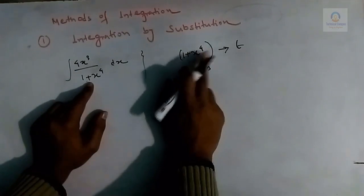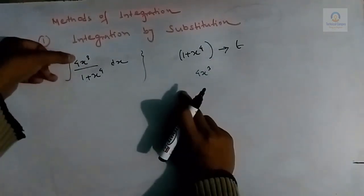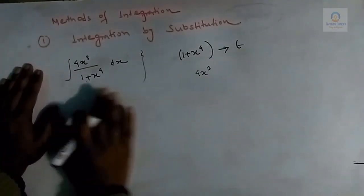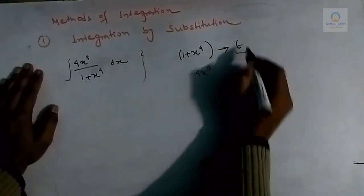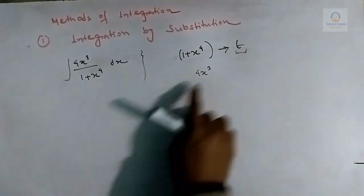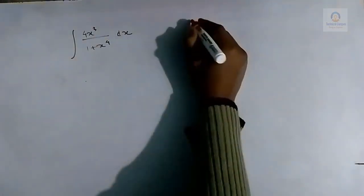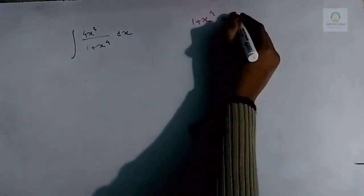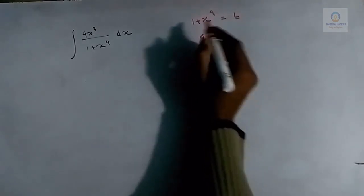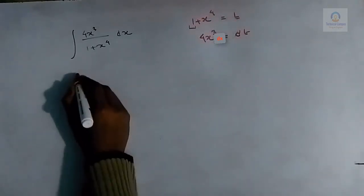By replacing the denominator with t, we automatically get the term for the numerator. Differentiating t = 1 + x⁴ with respect to x gives dt = 4x³ dx, since the differentiation of the constant 1 is 0. So the numerator 4x³ dx is replaced by dt.